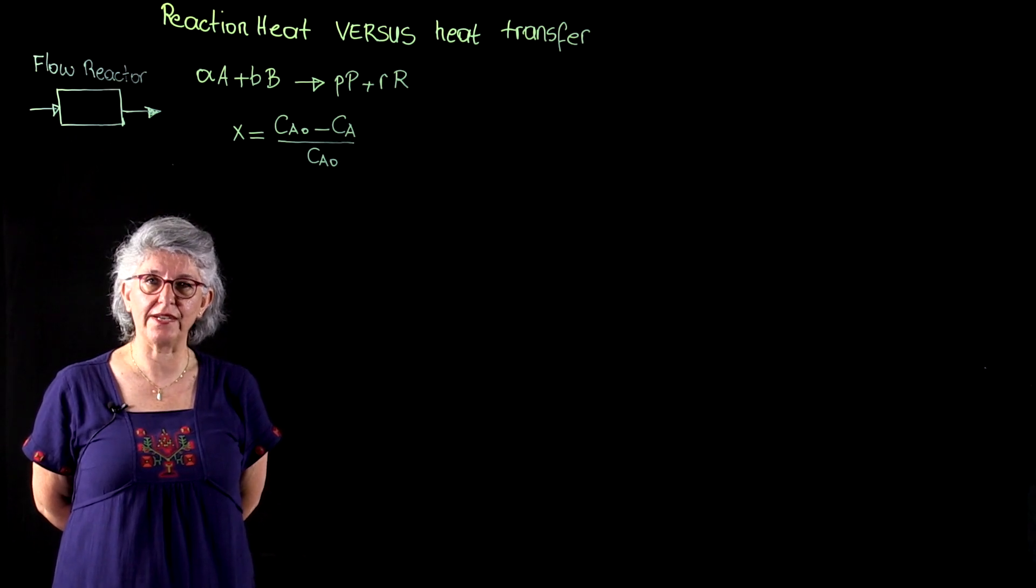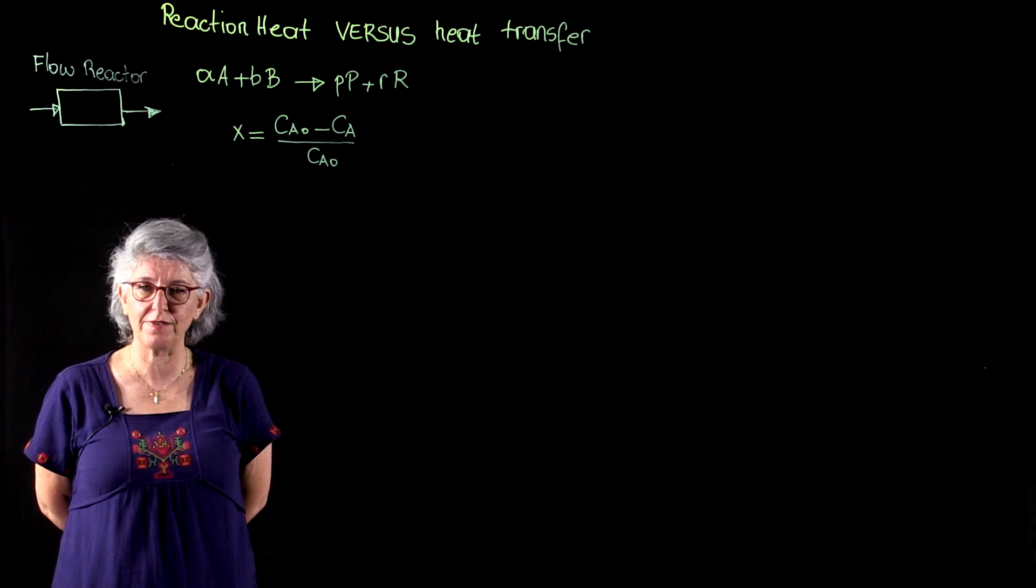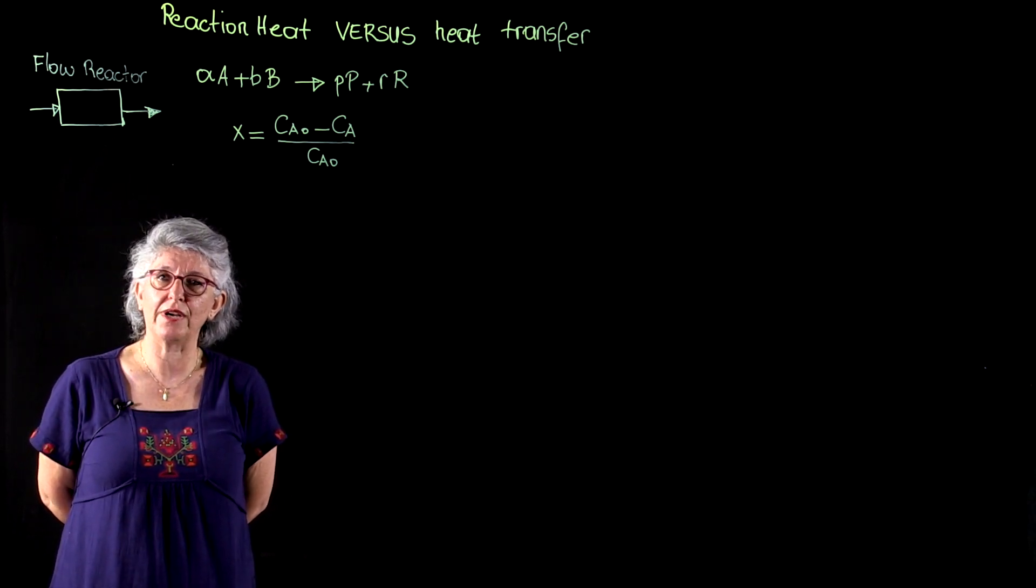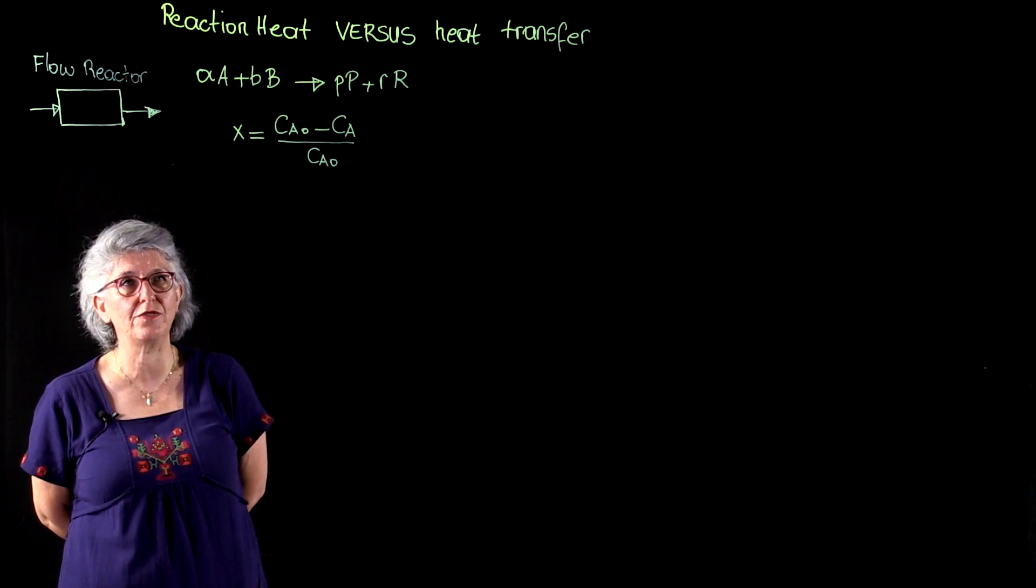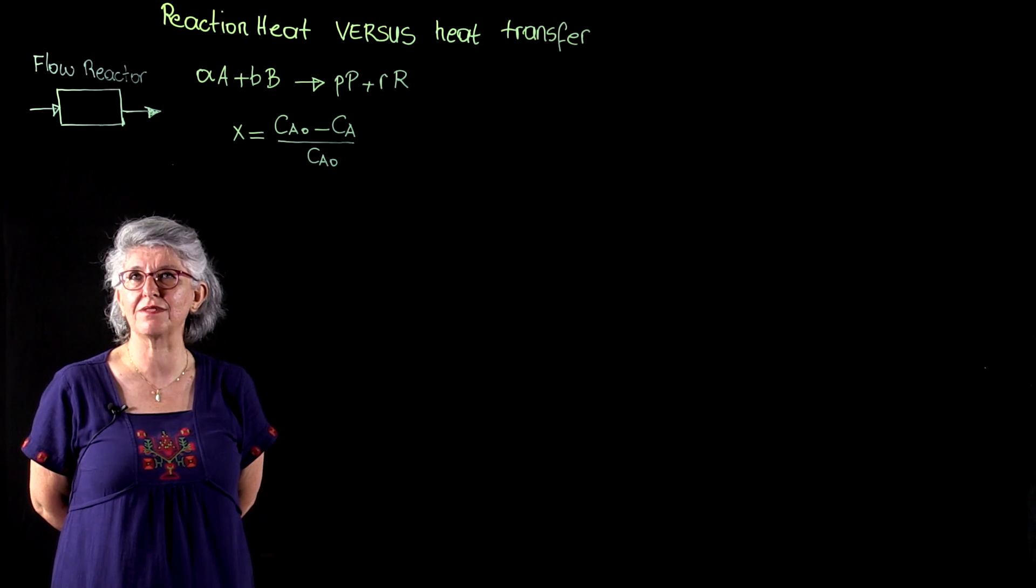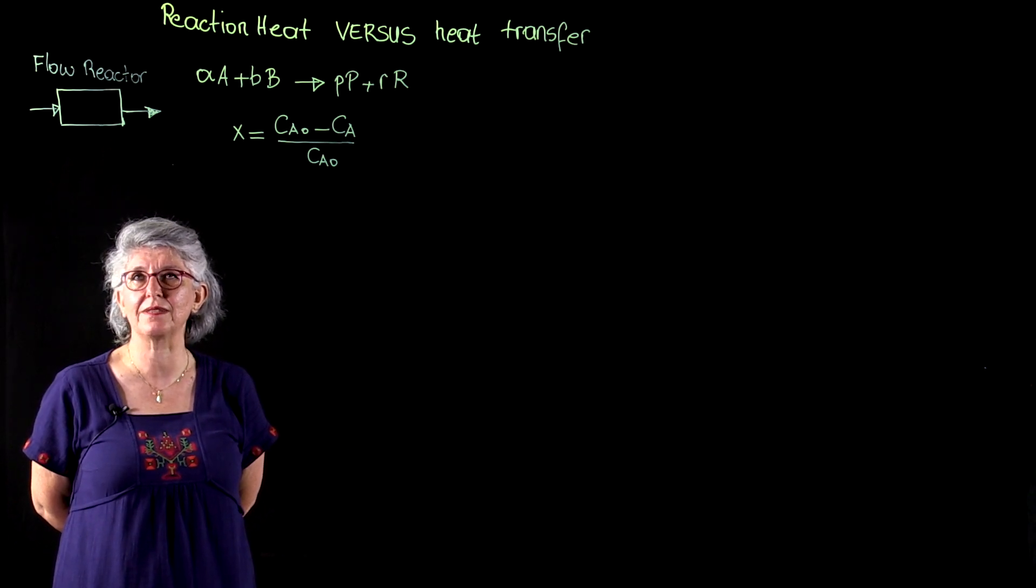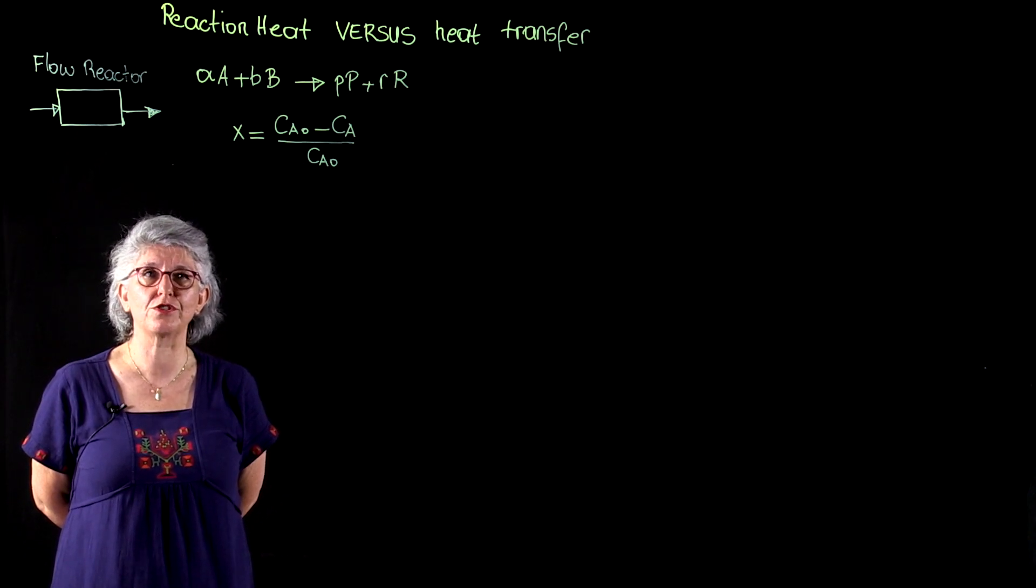The analysis we are going to conduct will be around the flow reactor, but this is going to be a general flow reactor. We are not going to identify whether it is a CSTR or a plug flow reactor. Therefore, it is a generic rectangular box representing our reactor. Here, we are going to use the term conversion.